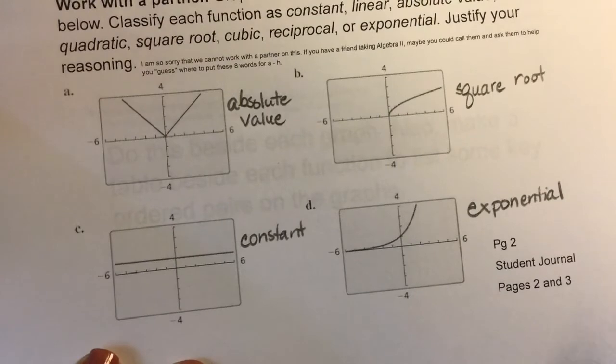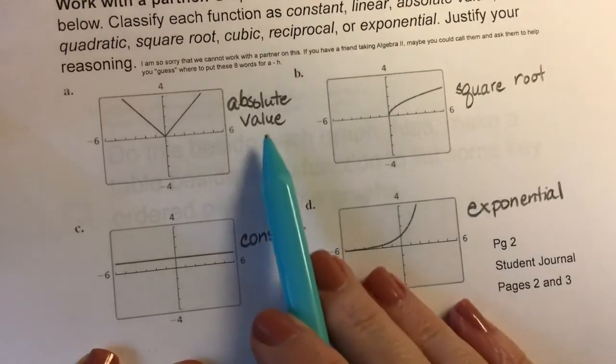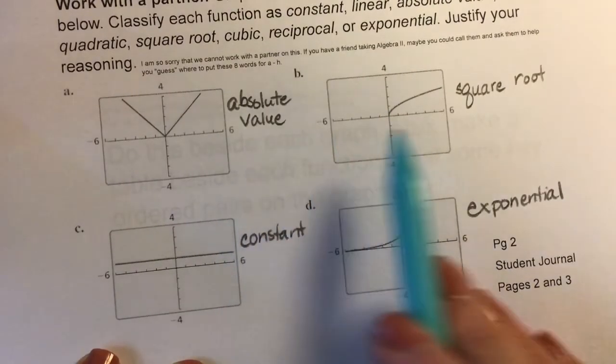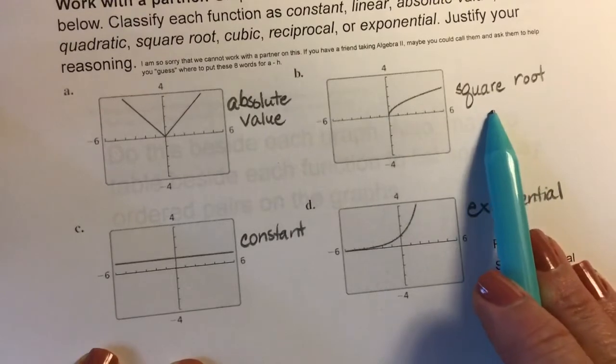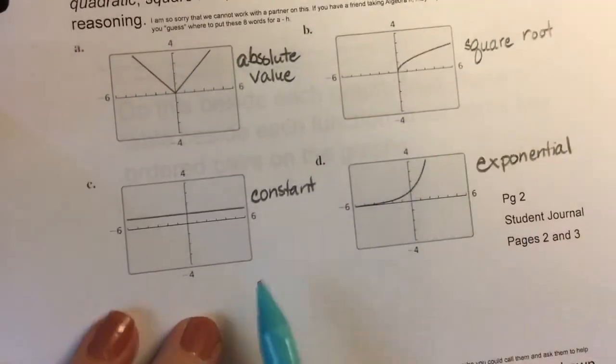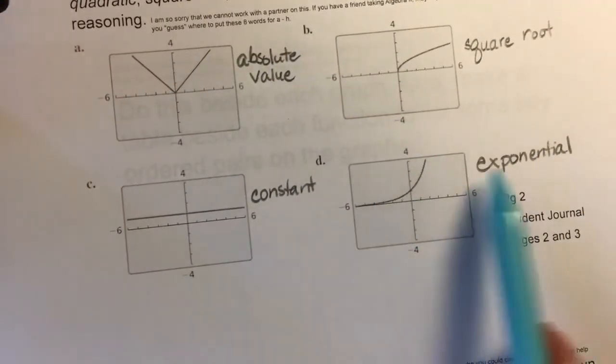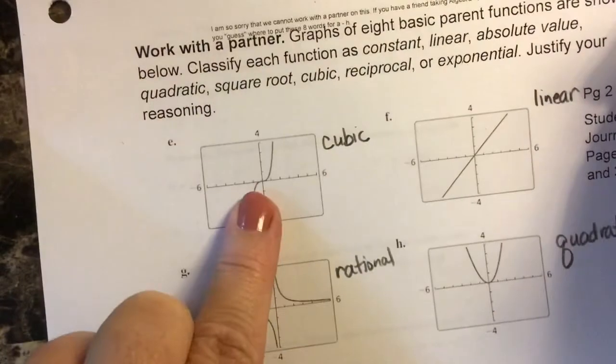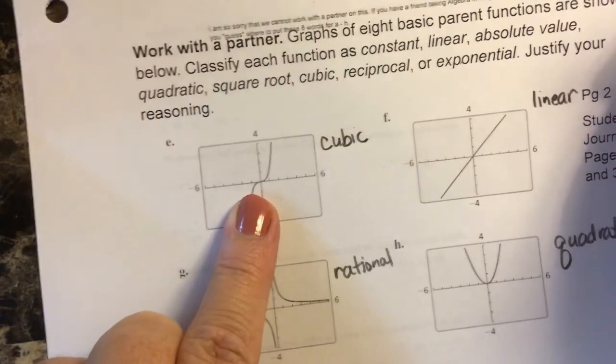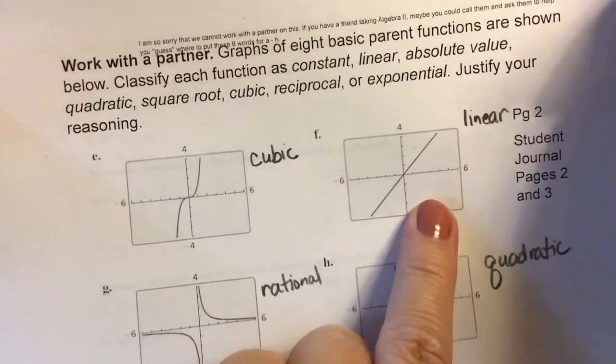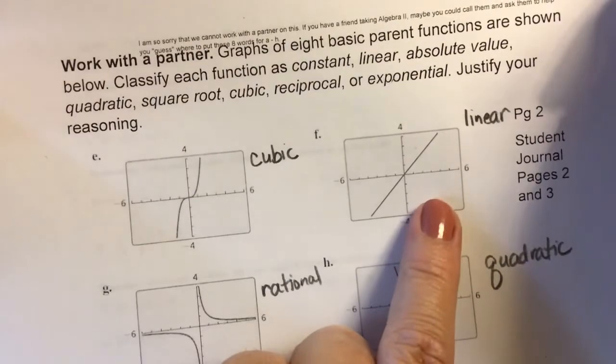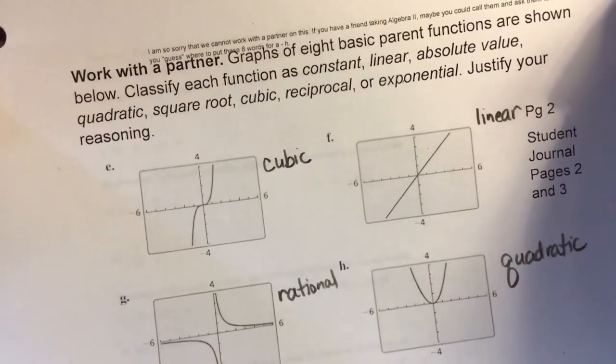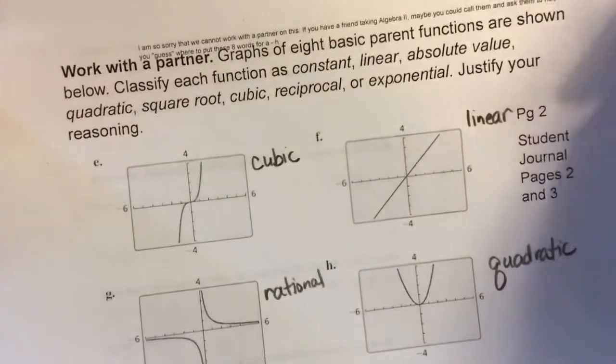I have labeled each of these. I'll go through the answers with you quickly: absolute value for letter a, square root for letter b, constant for letter c, exponential for letter d, cubic for letter e, linear for letter f, rational for letter g, and quadratic for letter h.